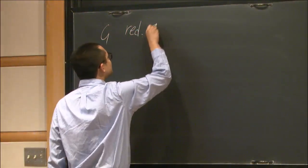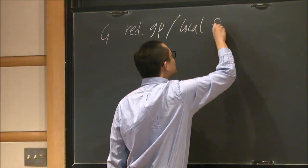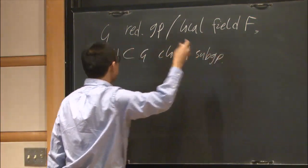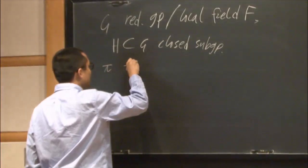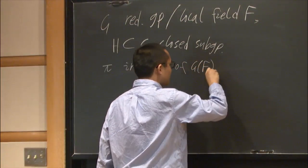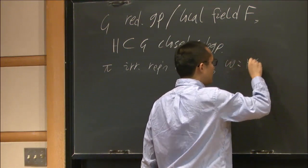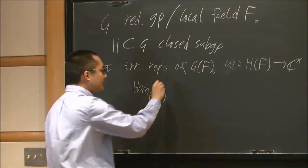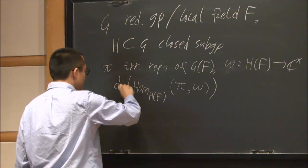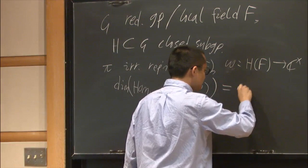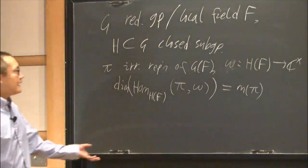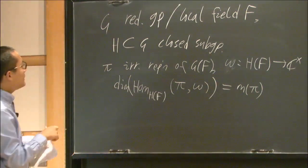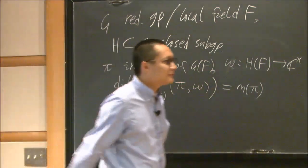You start with G, a reductive group defined over a local field F, and let H contained in G be a closed subgroup. Usually we require G/H to be a spherical variety. Then you let pi be an irreducible representation of G_F and omega be a character on H_F. Locally, you're interested in the Hom space Hom_{H_F}(pi, omega). In particular, we care about the dimension of this space, which is denoted by m_pi and called the multiplicity. In many cases, this multiplicity is also related to Langlands functoriality or L-functions and epsilon factors. So in general, once you have a group G, H, and a character, you can study the multiplicity. Now let's move to the specific models.